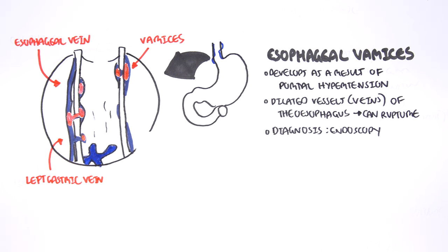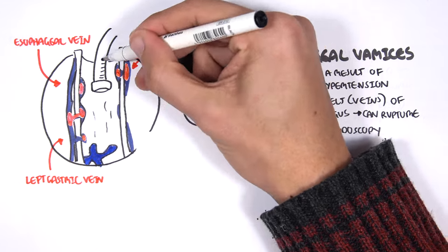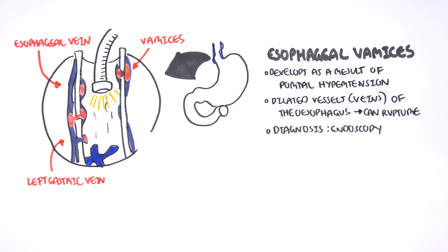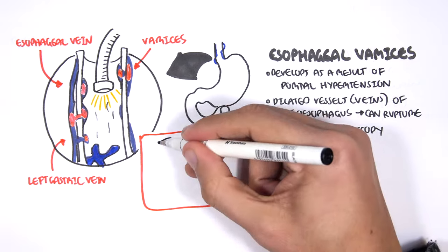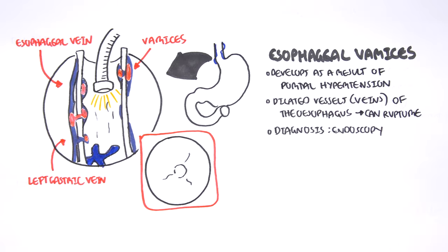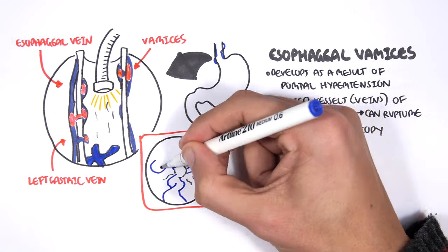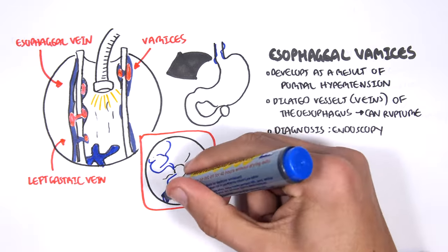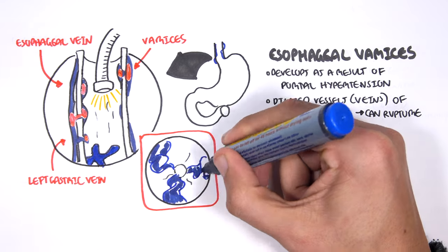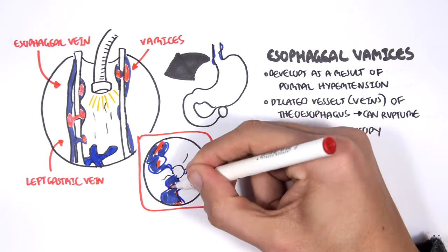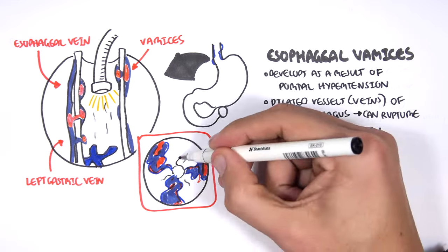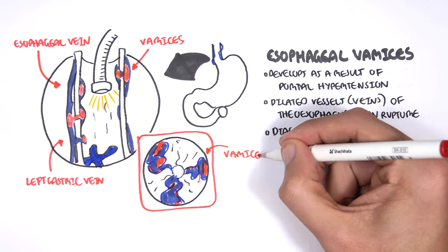Here I'm drawing an endoscope, which is used to diagnose esophageal varices. Here I'm drawing an image of what we would see if we looked inside the esophagus. We can see these prominent bulging veins full of blood, which can rupture. That's going to cause internal hemorrhage, which is very dangerous.